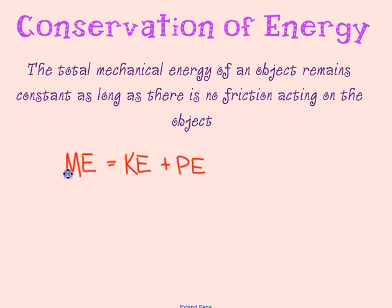A subset of conservation of energy says that the total mechanical energy of an object remains constant as long as there is no friction acting on the object. Friction and air resistance would go together there. So what we're saying is that at any time during something's motion, the mechanical energy of that object will remain the same as long as there's no friction.